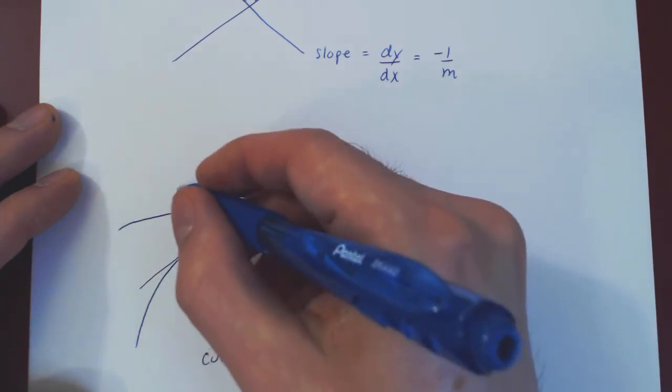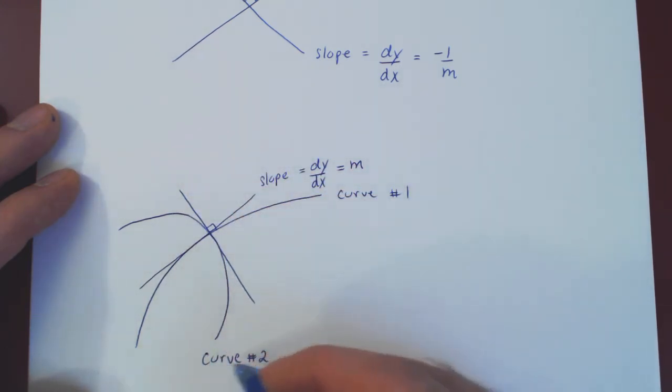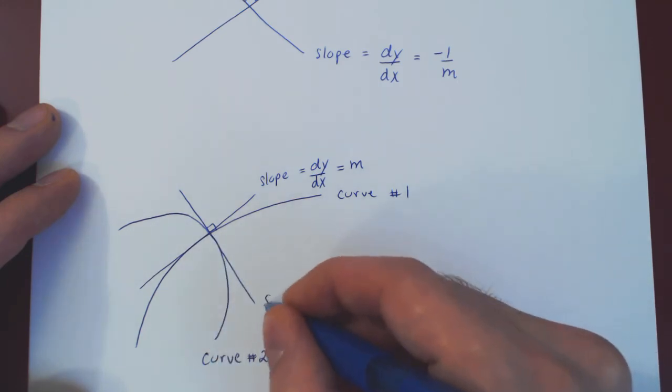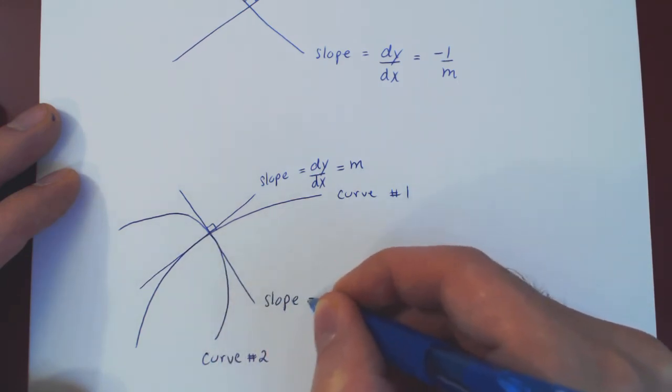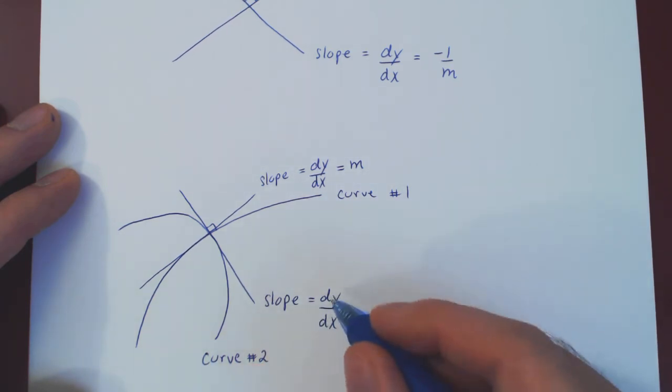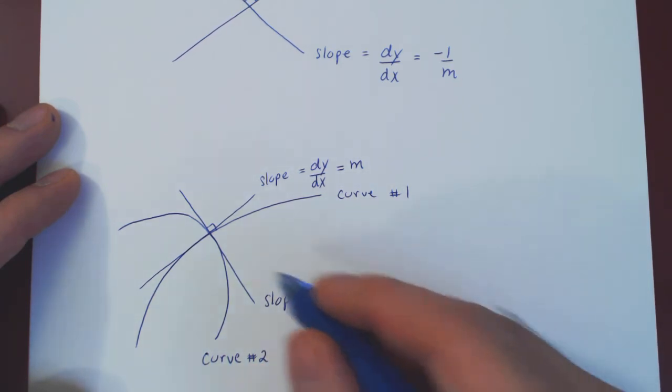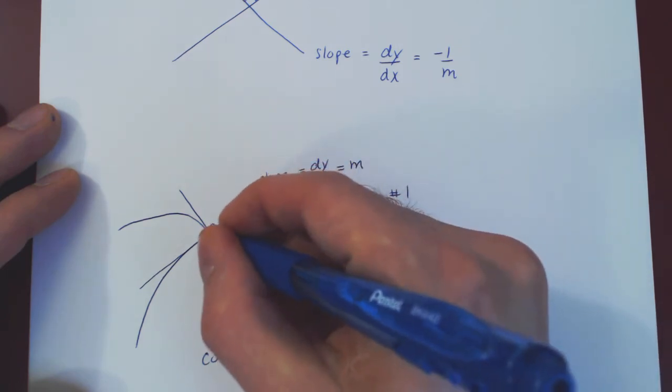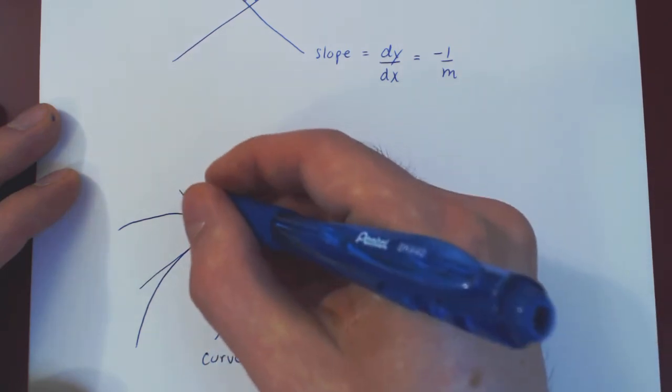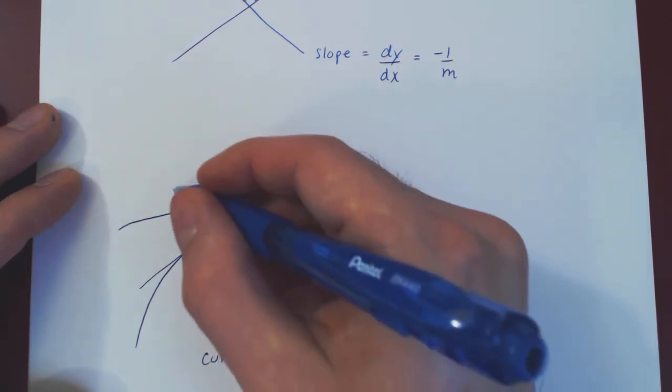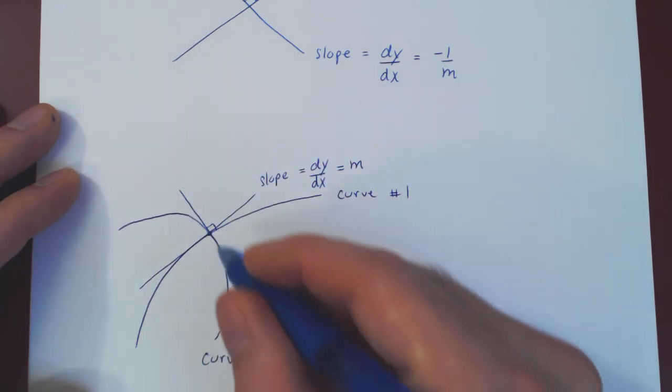If you find the tangent line now to the second curve at this point, the slope again is the derivative of curve 2 now. And if you evaluate the derivative at the point of intersection, you will obtain, of course, a constant value, being the slope of the tangent line to the curve at this point.